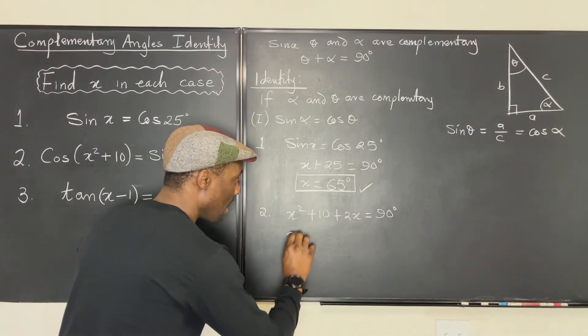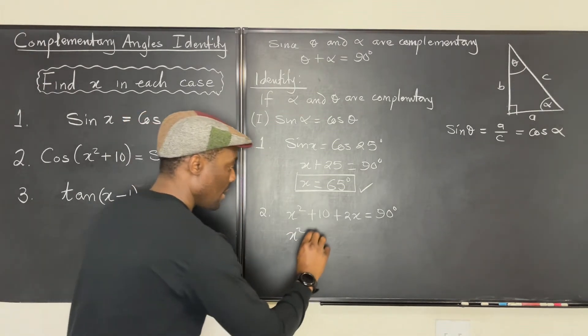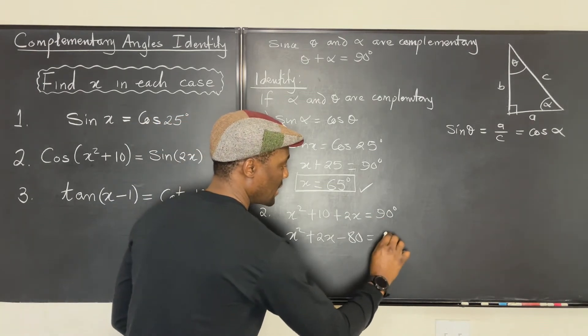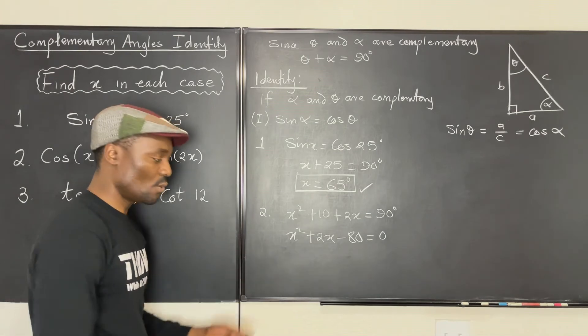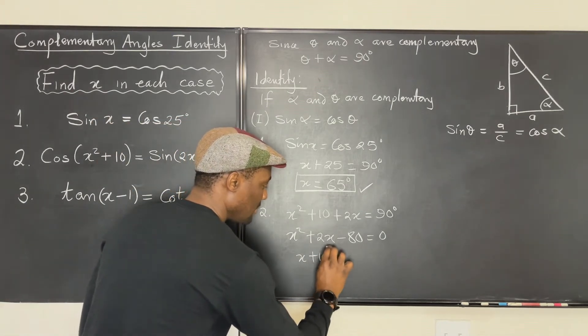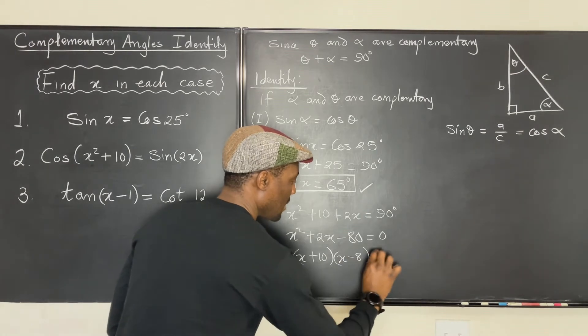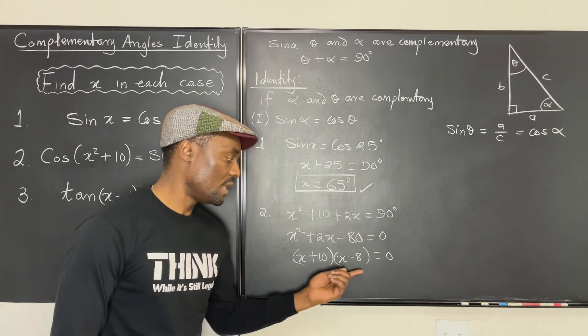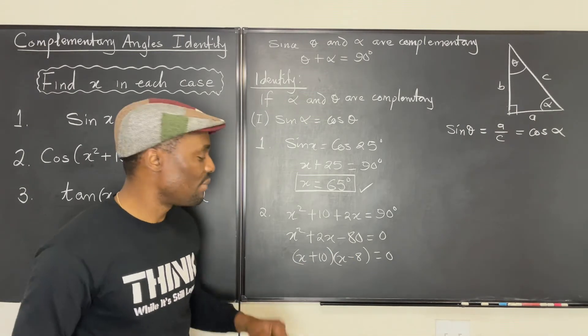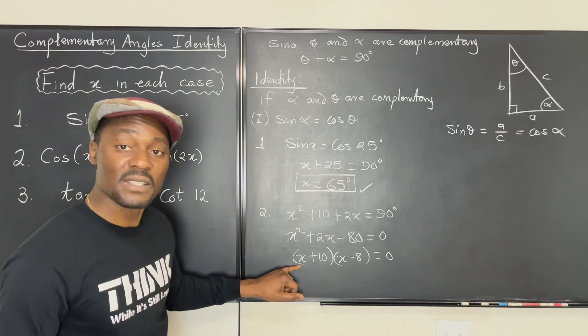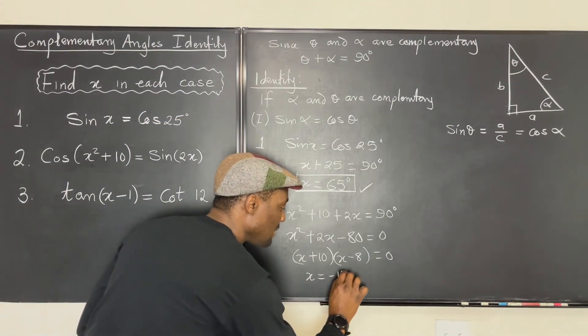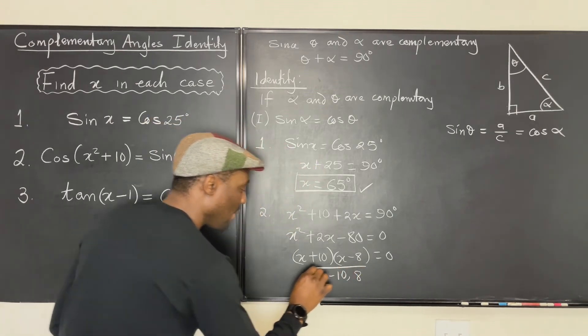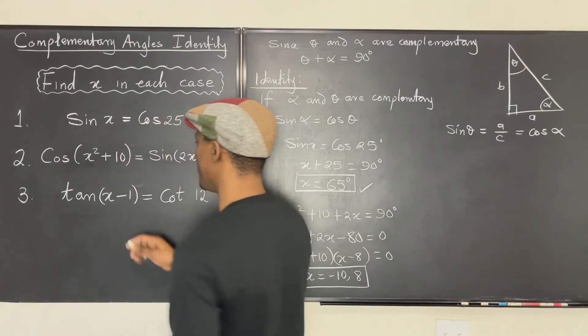So this is going to be x squared plus 2x. If I bring this over here, I'm going to get negative 80, and that's zero. If I factor this quadratic, I'm going to get x plus 10, x minus 8 equals zero. Using the zero product property, it means what makes this zero is when x is negative 10, or x equals 8. And those are the two possible values of x for which this equation will be true.